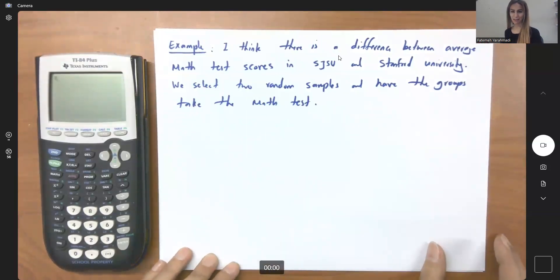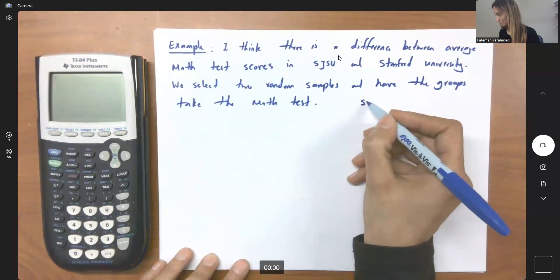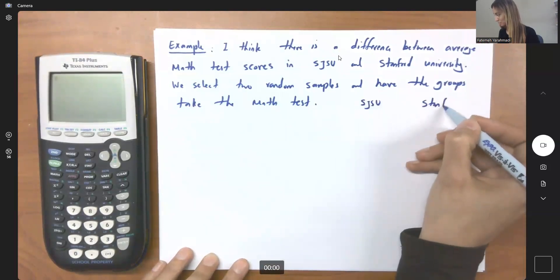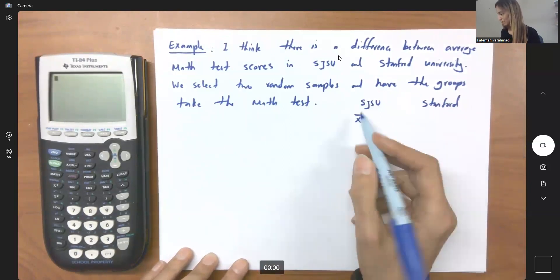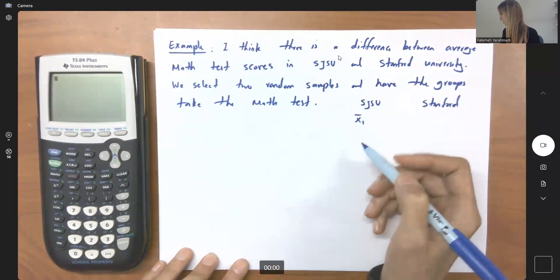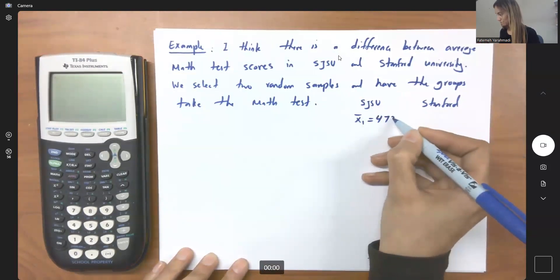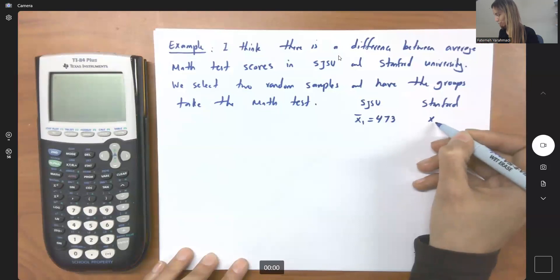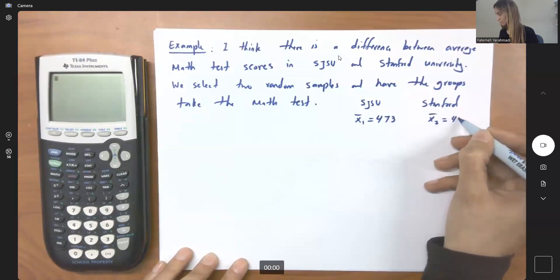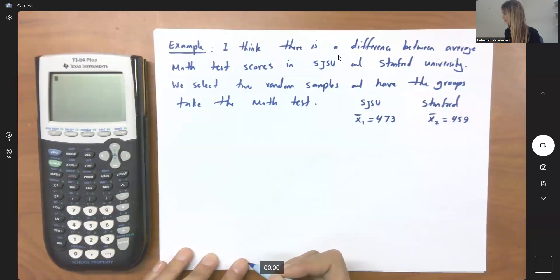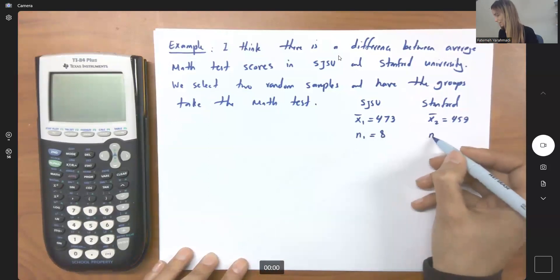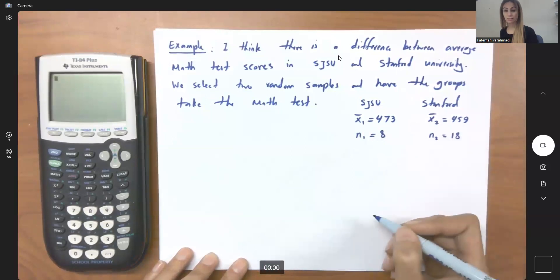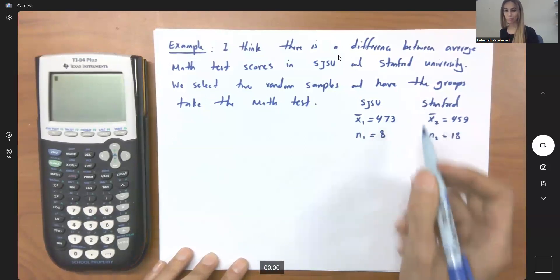These are the information that we are having from these two groups, San Jose State University and Stanford. So the average test score for San Jose State University was 473 and for Stanford was 459. I had eight students in the first exam in San Jose State University and I had 18 students in the same sample from Stanford.